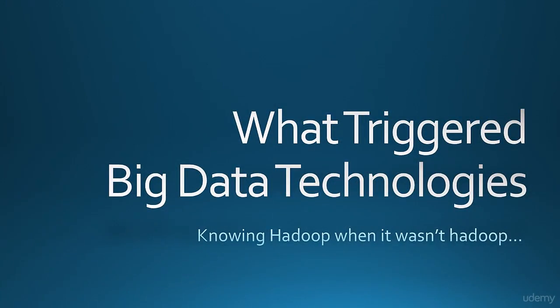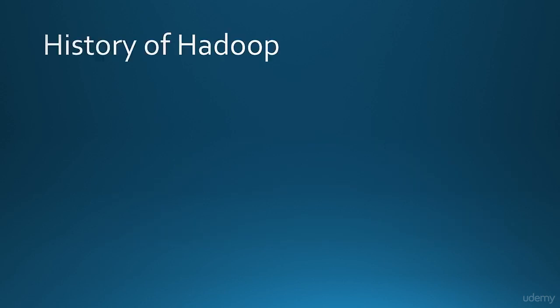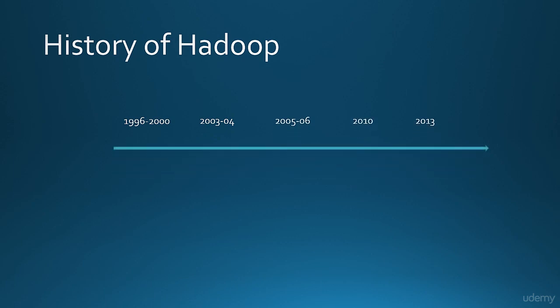Welcome to a new lesson. Till now we have looked into data and its importance. We also know that it is growing big and its possibilities in the coming future. In this lesson we would look at what triggered big data technologies and see how things unfolded from the time when Hadoop wasn't even Hadoop. It started around the year 1998 when the internet created a new boom and search engines were looking at huge amounts of data to process. They were the first to get hit by enormous amounts of data, looking to categorize all the web pages of the World Wide Web.